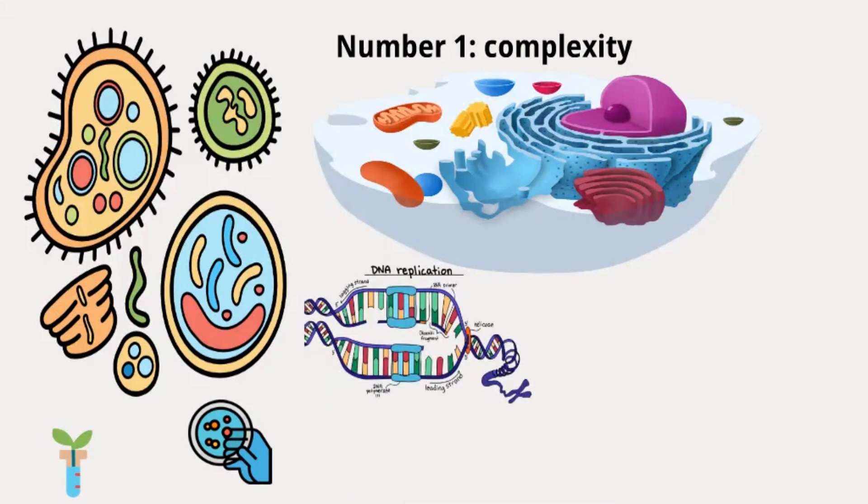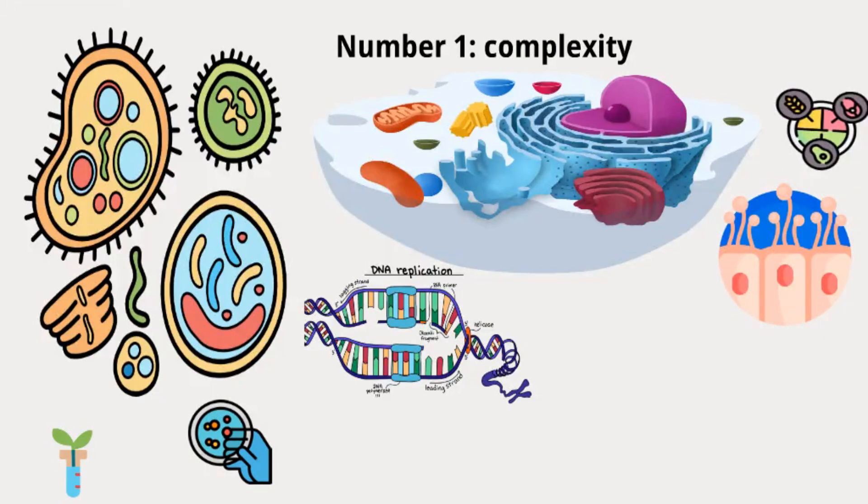Each type of cell and organelle has a consistent structure and composition. For example, the cells lining your intestine have specific features for nutrient absorption, and these features are similar in all humans.